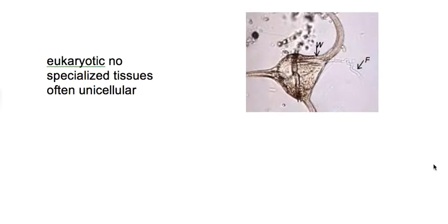For the most part, they're eukaryotic and usually unicellular. There are some that are multicellular, but there are no specialized tissues — they don't have parts like we would have parts. Some of them do cellular respiration, some do photosynthesis. You know them as protozoas, amoebas, parameciums, hydras, and euglena — those sorts of things.